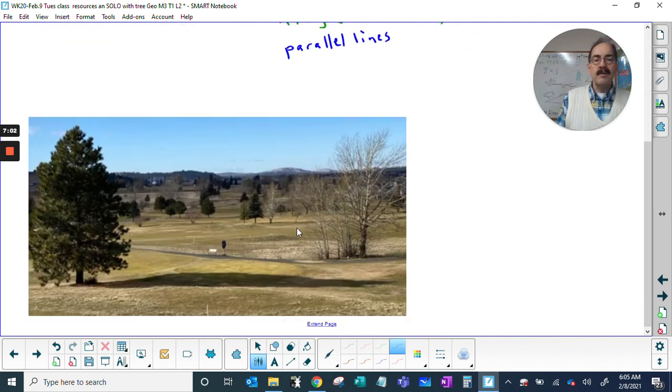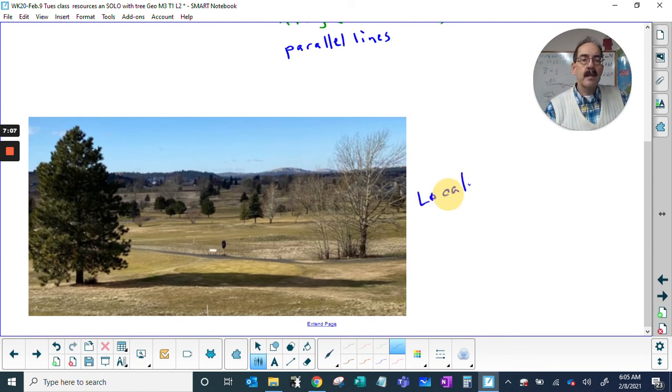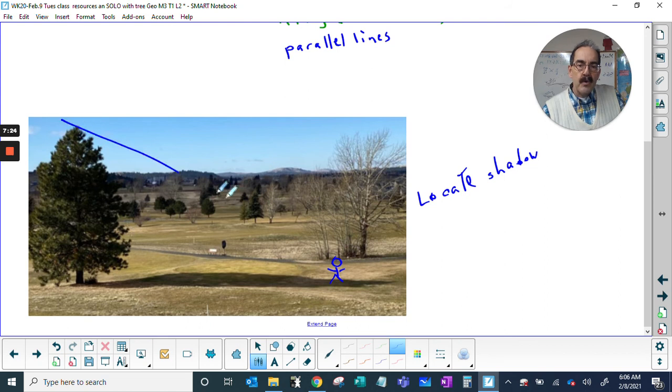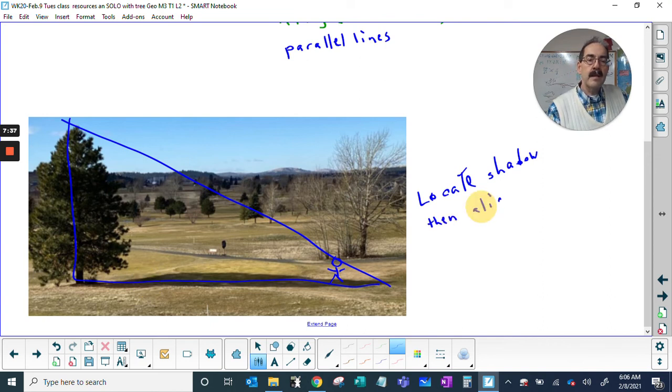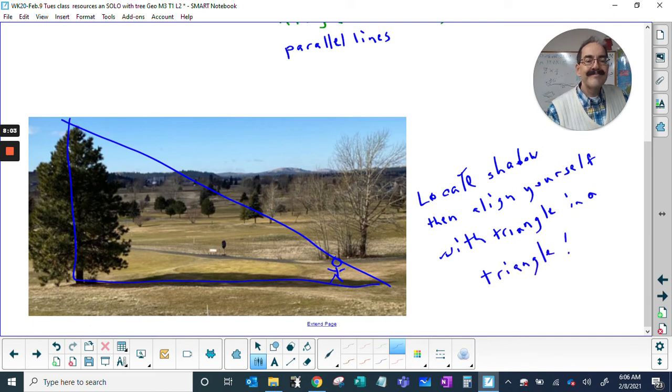I want you to go outside and locate a shadow. Once you locate a shadow, get some measurements. You need to find a place where when you stand, your shadow aligns with the triangle, and you can create triangle in a triangle.